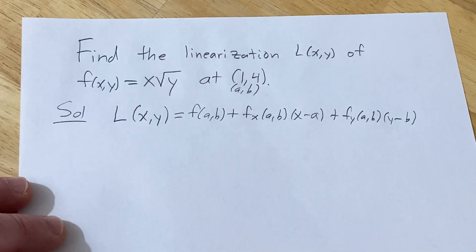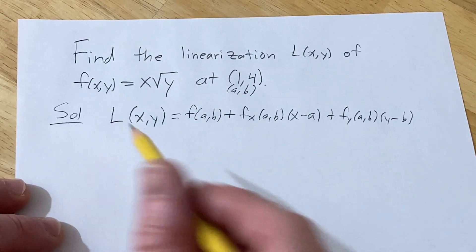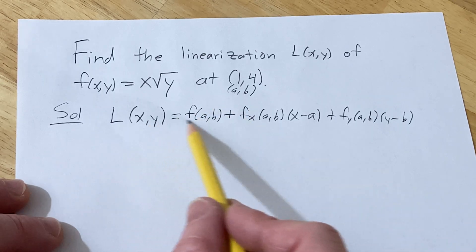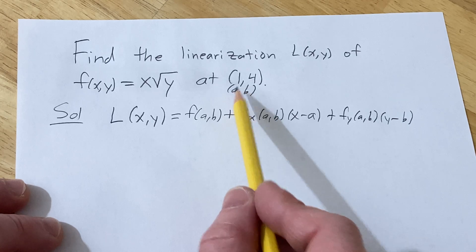This is called the tangent line approximation, or the linearization of the function. And basically this approximates the function whenever your ordered pair is close to (a,b).